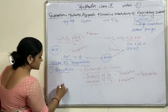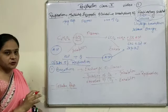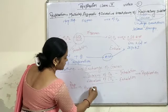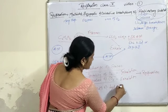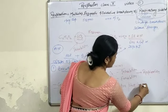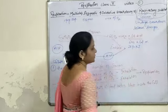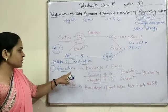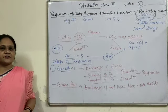Next is cellular respiration. Cellular respiration means when the breakdown of food takes place inside the cell — this event is known as cellular respiration. Inhalation and exhalation are only surface processes.